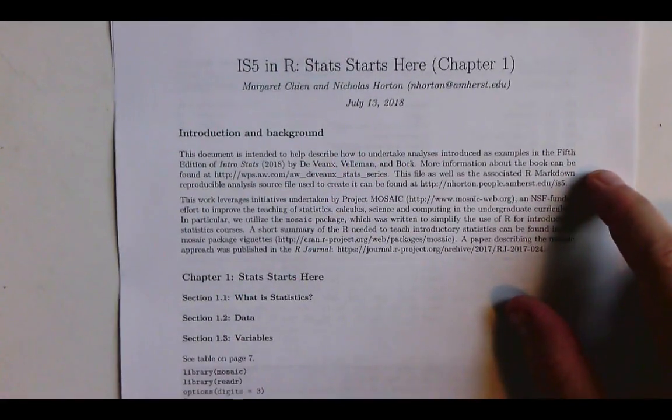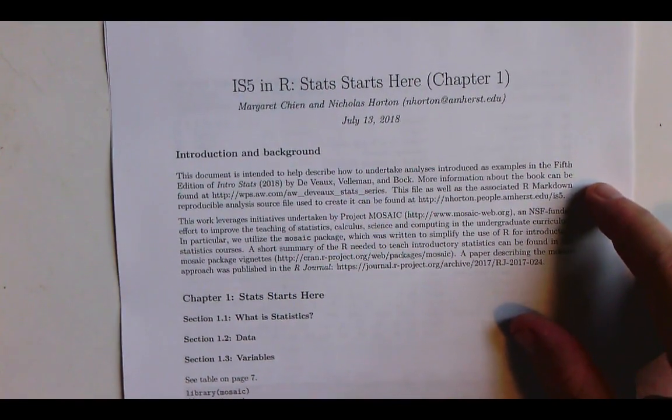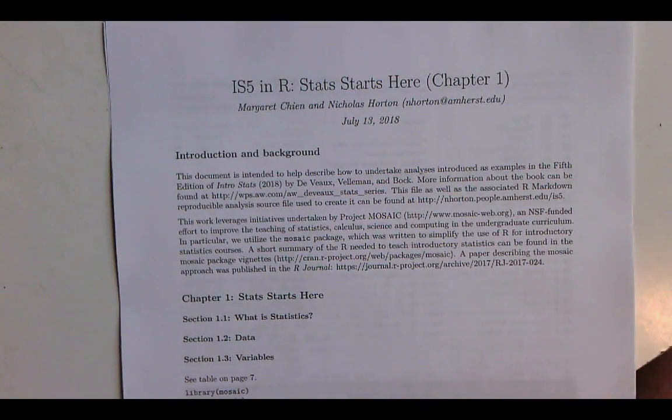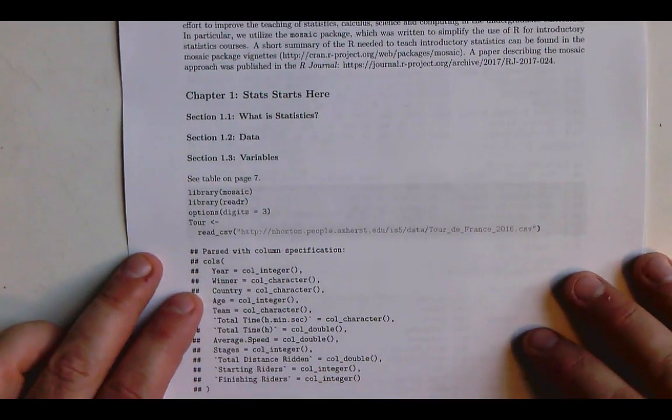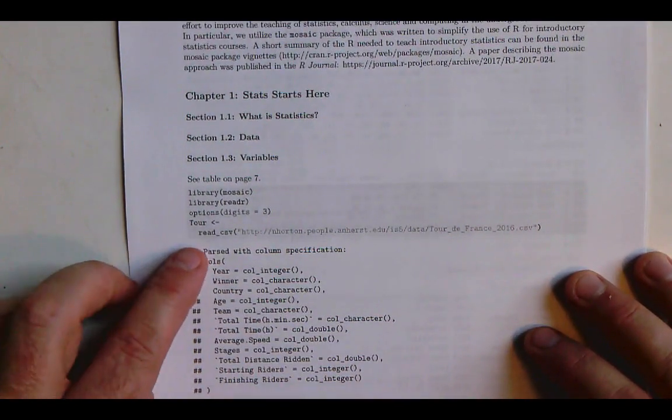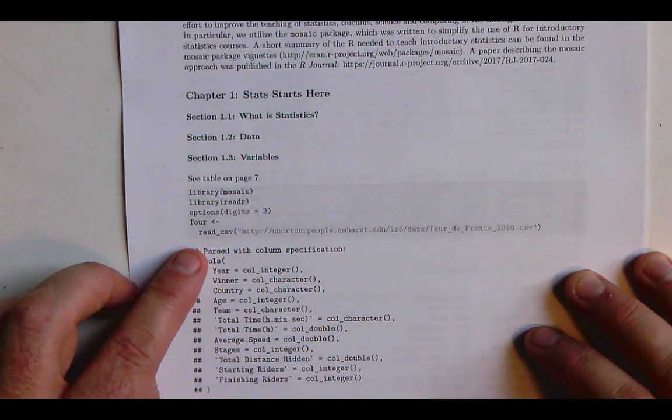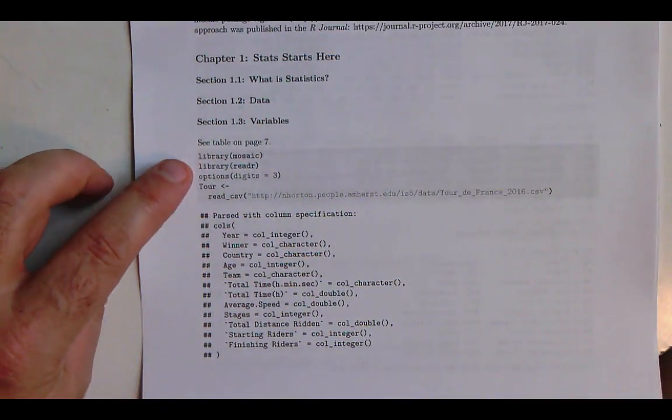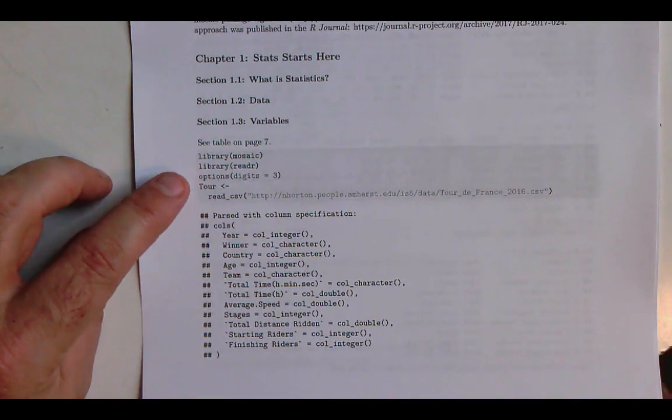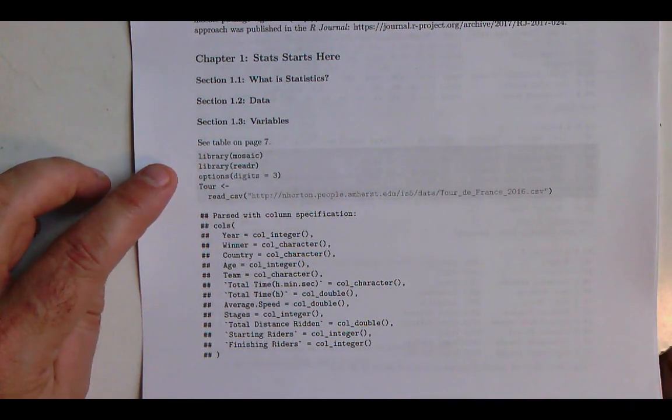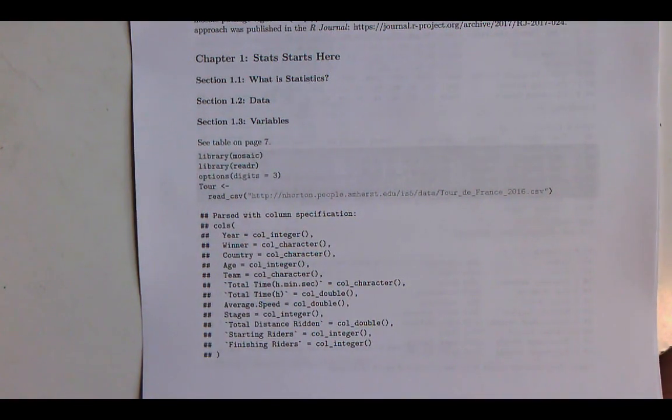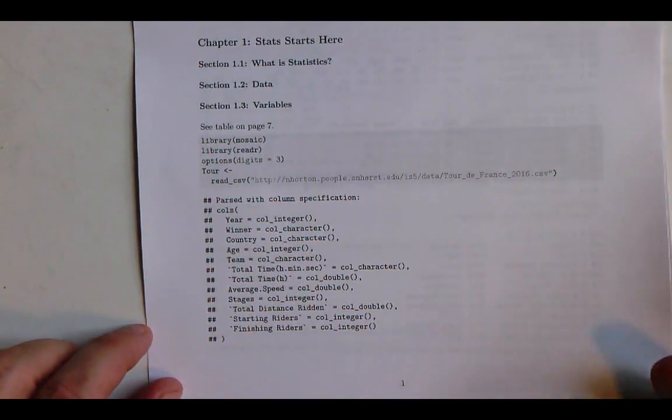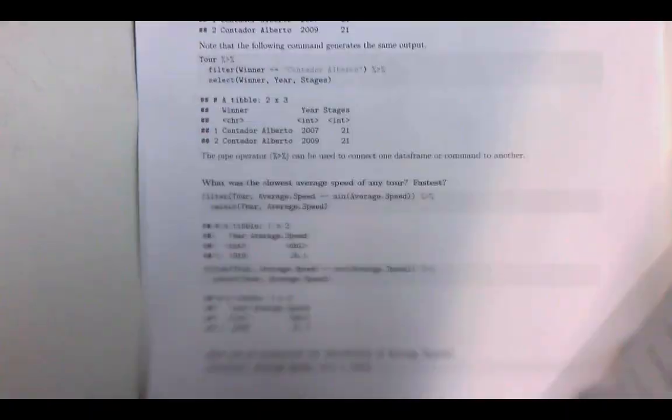Along with this, we have the IS5 and R web page, which describes how to go ahead and load the data. So here, for example, we're bringing in the Tour de France data using a function called read underscore CSV. We've done this after we've actually gone ahead and loaded some packages. We'll talk more about packages, but essentially this add functionality in for us.